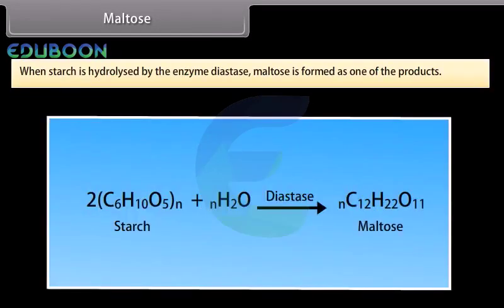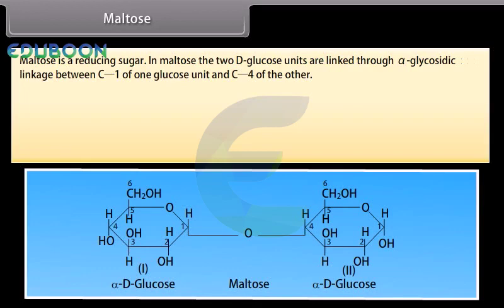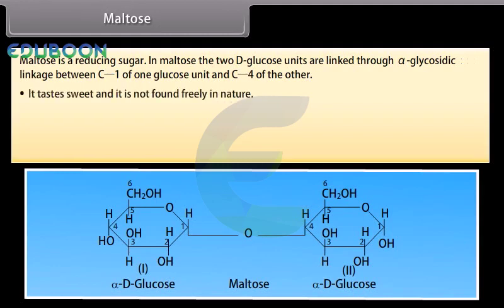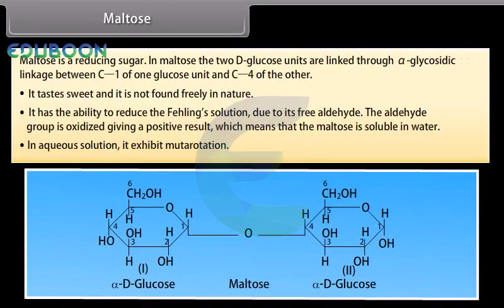When starch is hydrolyzed by the enzyme diastase, maltose is formed as one of the products. On hydrolysis with dilute acids, one mole of maltose yields two moles of D-glucose. Maltose is a reducing sugar. In maltose, the two D-glucose units are linked through alpha-glycosidic linkage between C1 of one glucose unit and C4 of the other. It tastes sweet and is not found freely in nature. It has the ability to reduce Fehling's solution due to its free aldehyde. In aqueous solution, it exhibits mutarotation.